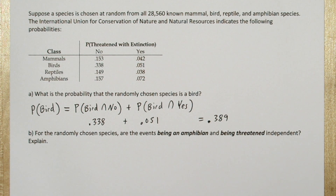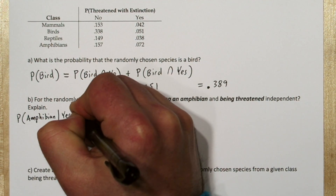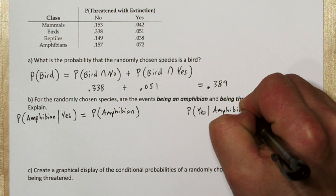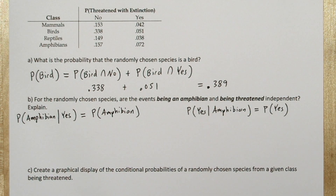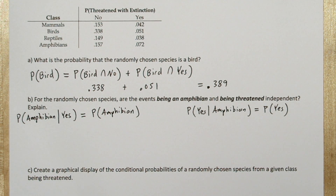To determine if being an amphibian and being threatened are independent events, we have to check two equations. First, we need to check that the probability of being an amphibian given you're threatened with extinction equals the probability of being an amphibian. If this equation is true, it means that if you know a species is threatened with extinction, it doesn't give you any additional predictability about whether it's an amphibian or not — being threatened with extinction is independent of whether it's an amphibian or not.